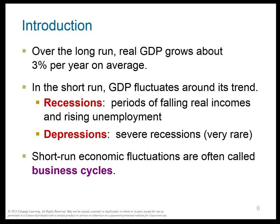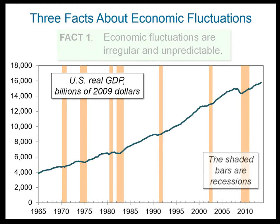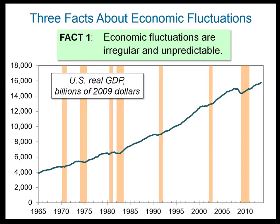Here is the long run GDP of the United States. You can see it kind of goes up about 3% per year. The shaded bars are recessions, and you see that they're irregular and unpredictable. So even though it's called a business cycle, it's not like a cyclical process — it just kind of happens whenever. That's fact number one.